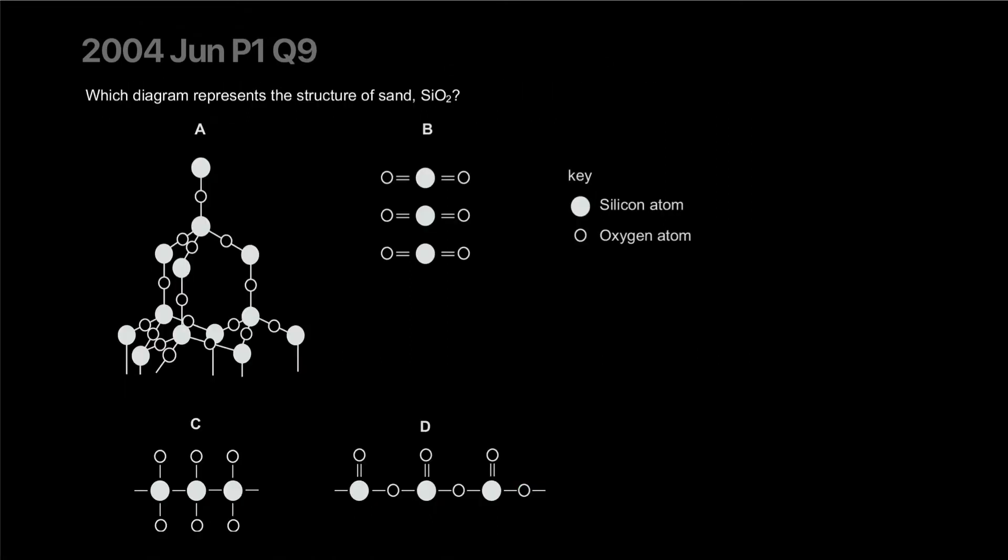Which diagram represents the structure of sand, SiO2? A lot of people probably went for B because they think it's very similar to carbon dioxide. Carbon dioxide is a gas. It's how their structures are made, how they're working together is what gives them their physical properties. SiO2 is sand and it has incredibly high melting point.